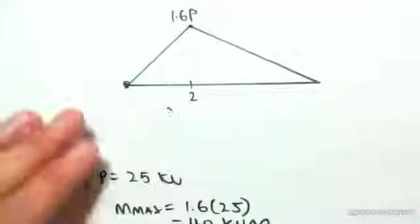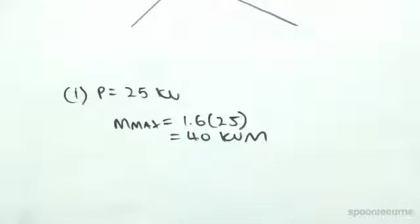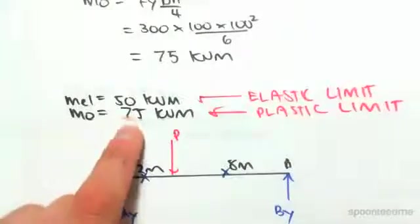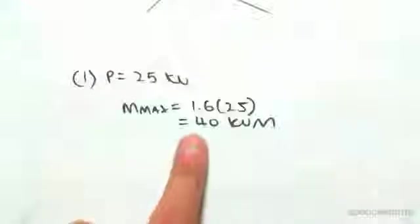So we now need to determine where that moment is lying, in which range in respect to our elastic and plastic limits. So we found that our elastic limit was 50 and our plastic limit was 75.